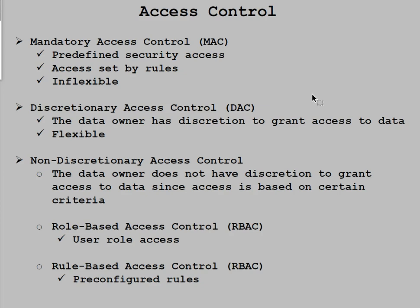Mandatory Access Control is used in high-security organizations. The DOD applies this — so if you have unclassified, secret, or top secret information, each classification has a very specific meaning. Unless you have that particular level, you cannot access it regardless of anything else. Even if somebody created the data, they cannot provide it to you if you don't have that level of classification.